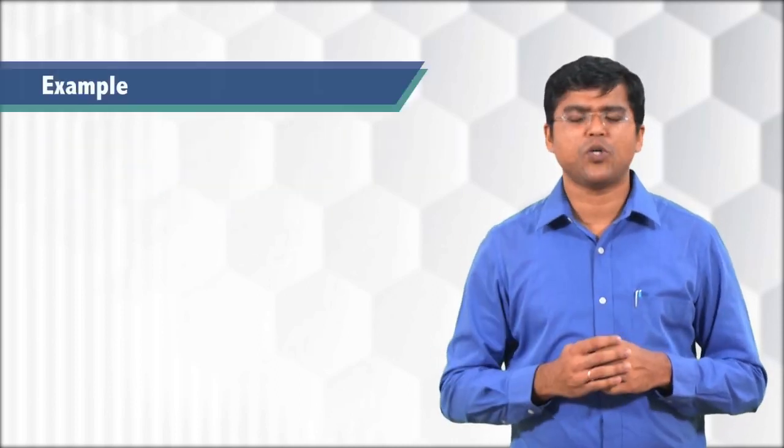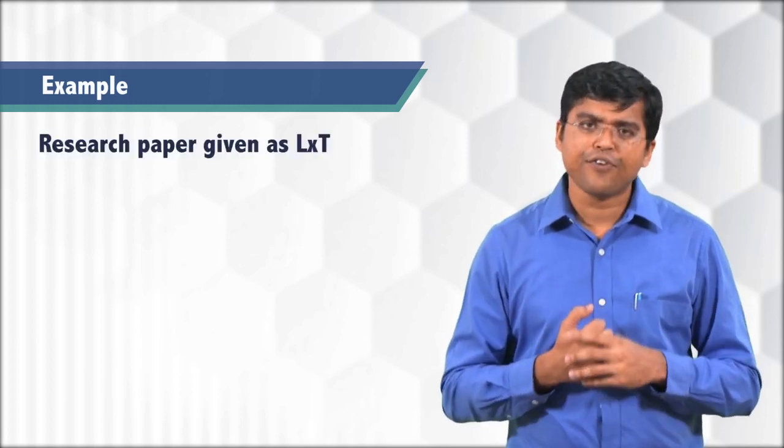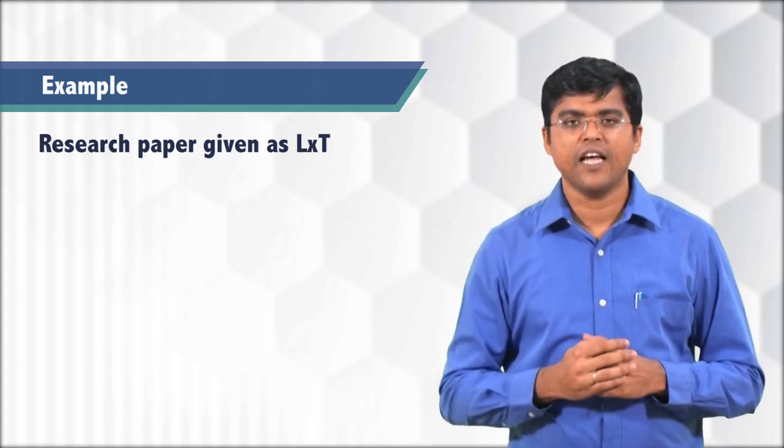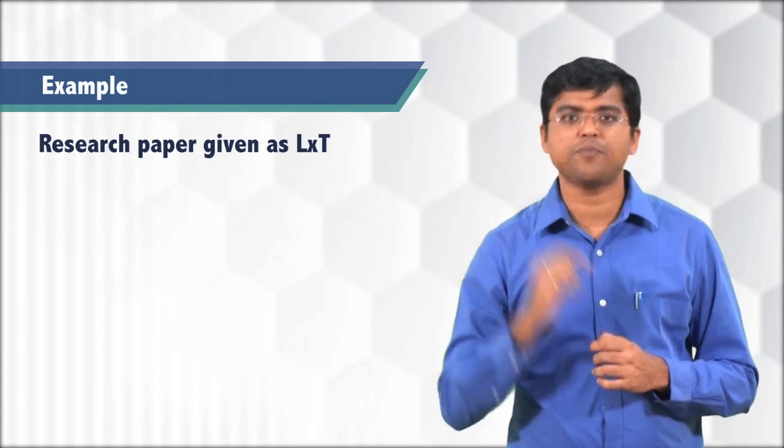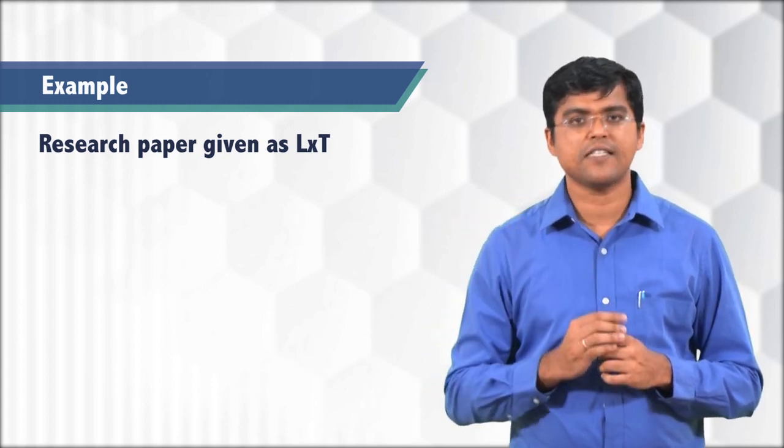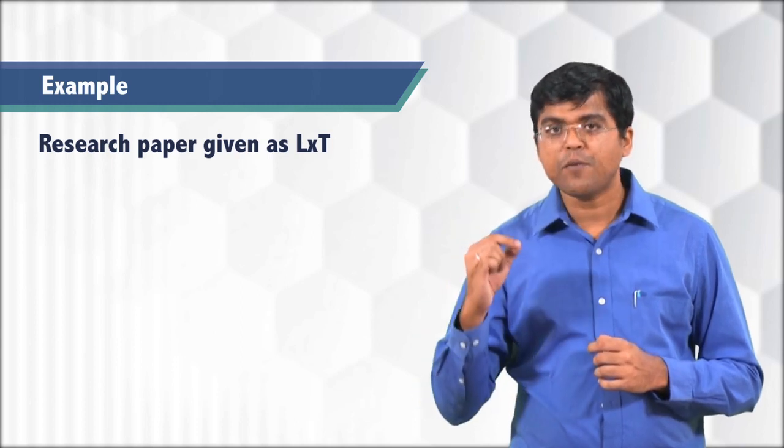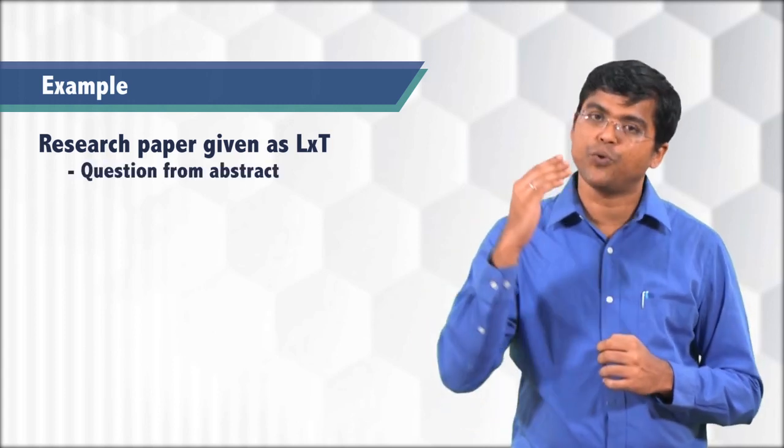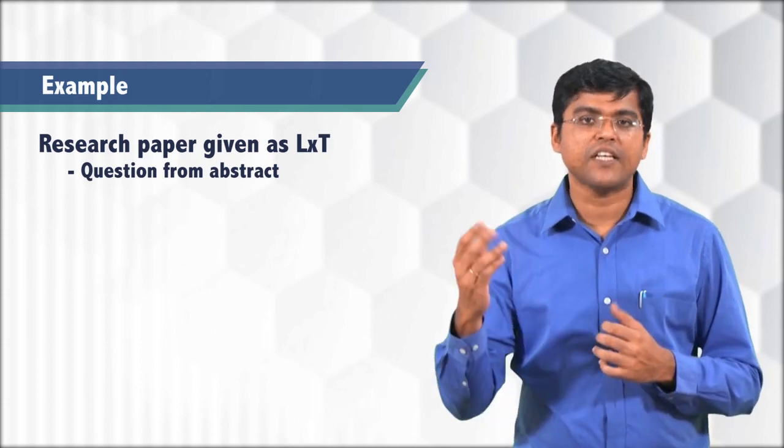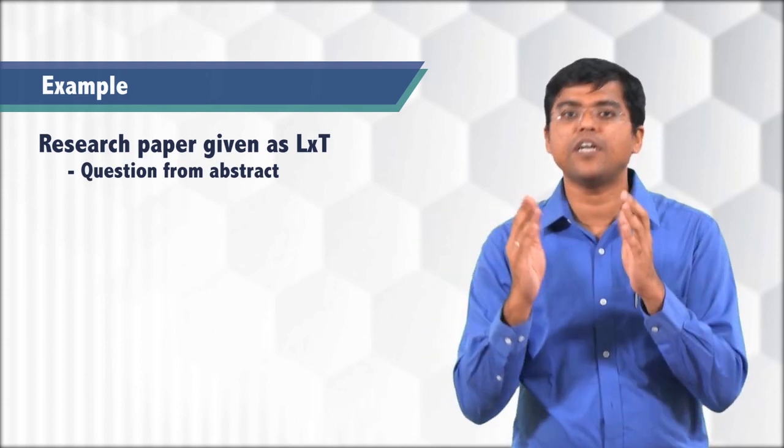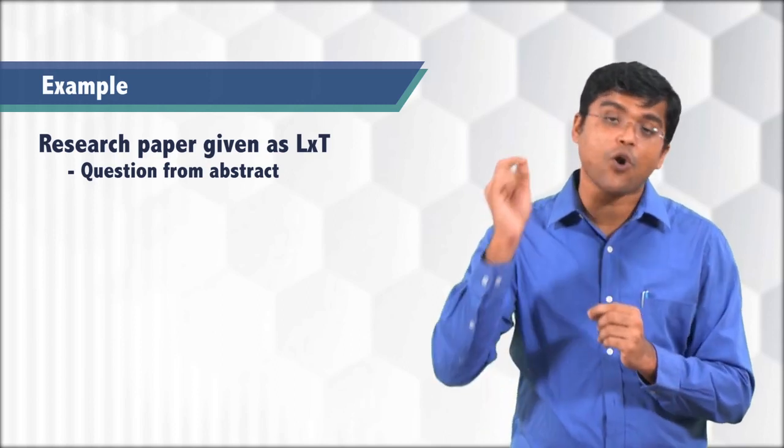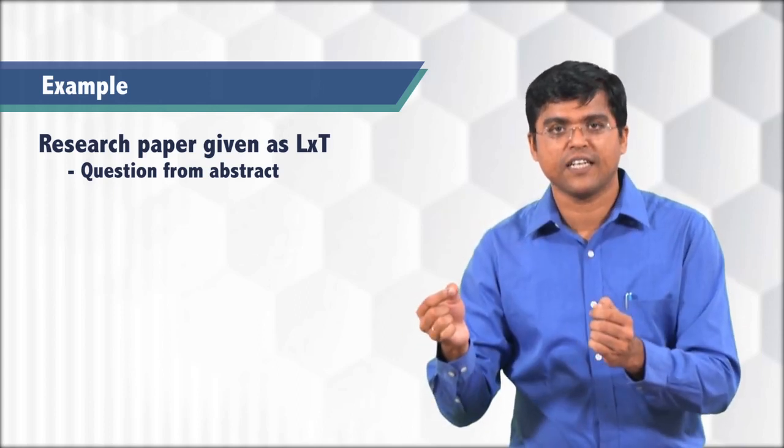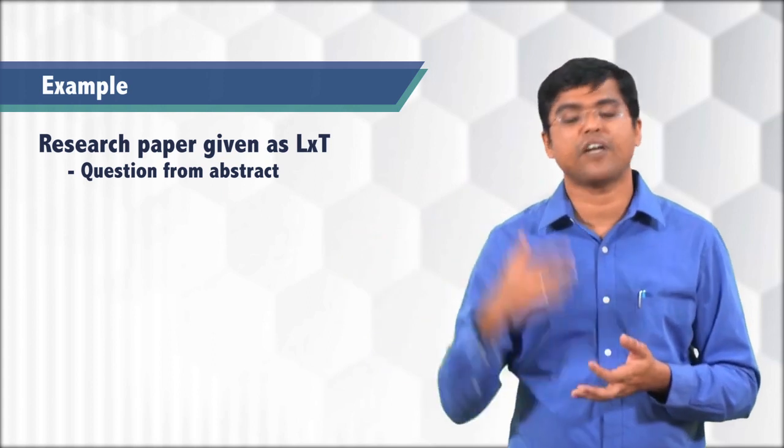Let me give a simple example. Consider the case of a research paper which you have given as a learning extension trajectory. While creating an assimilation quiz to this research paper, what you should keep in mind is that the learner should be able to immediately get this information by just accessing this resource. You could give a question as to something that is there in the abstract, some important new contribution of the paper that is already available in the abstract. Your question could be, what is the contribution of this paper, that they can easily find out from the abstract.